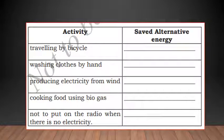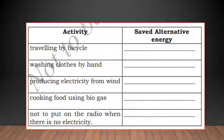Use the clues given – fuel energy, chemical energy, electrical energy, and charcoal energy – and write which alternative energy is saved by doing the following activities. By travelling by bicycle, you save fuel energy. Washing clothes by hand saves electrical energy. Producing electricity from wind saves charcoal energy, since charcoal is usually used to produce electricity. Cooking food using biogas saves fuel energy. Not putting on the radio when there is no electricity saves electrical energy.